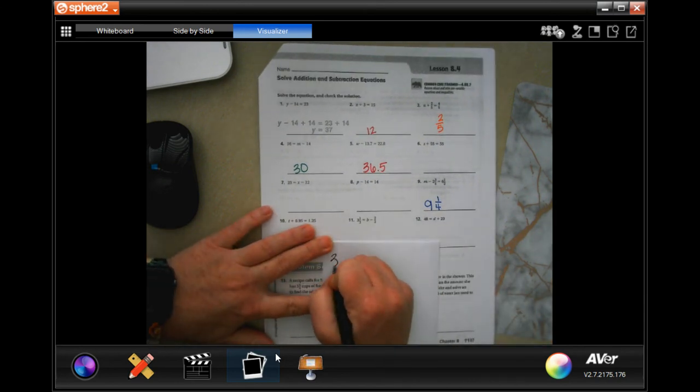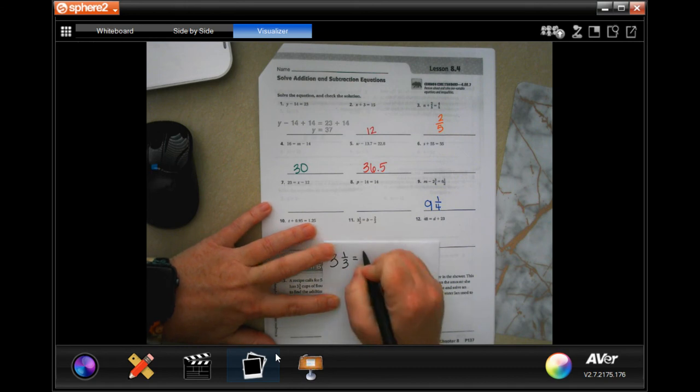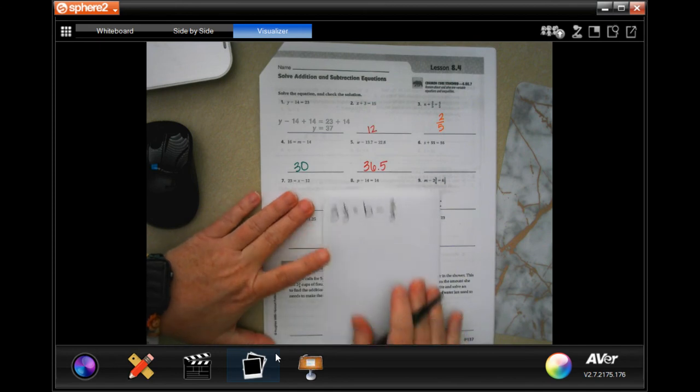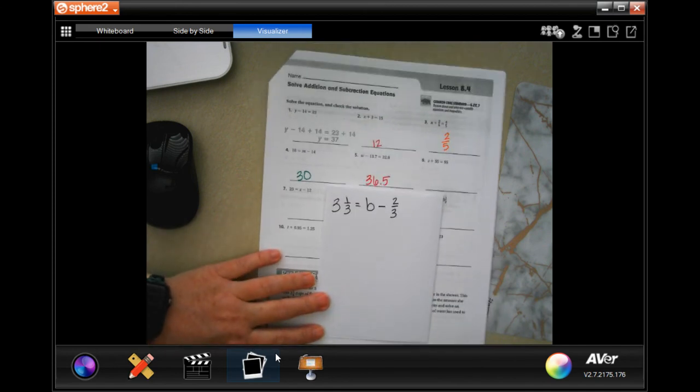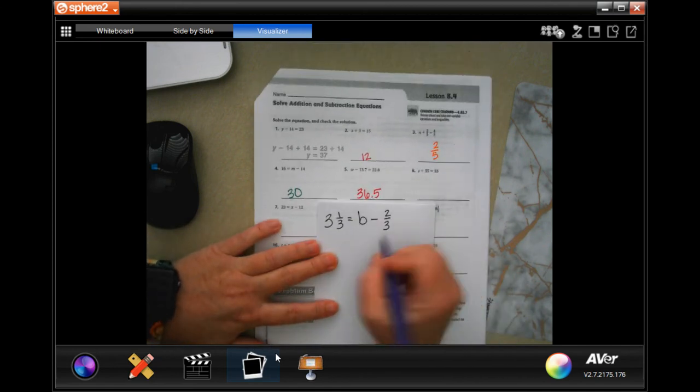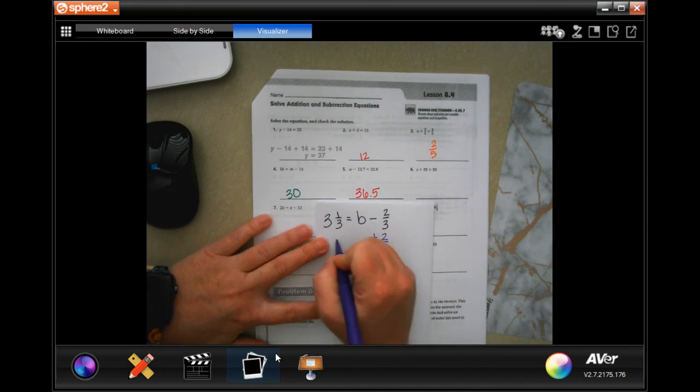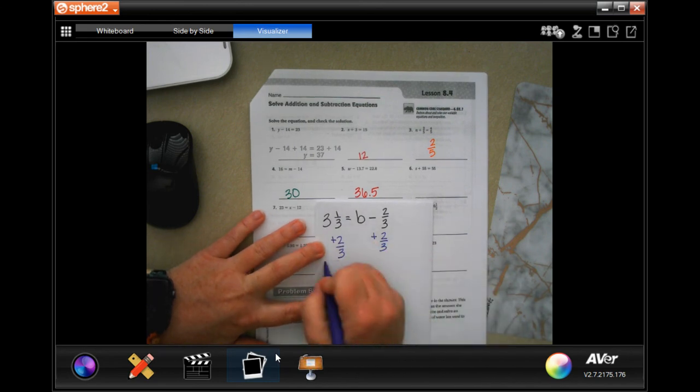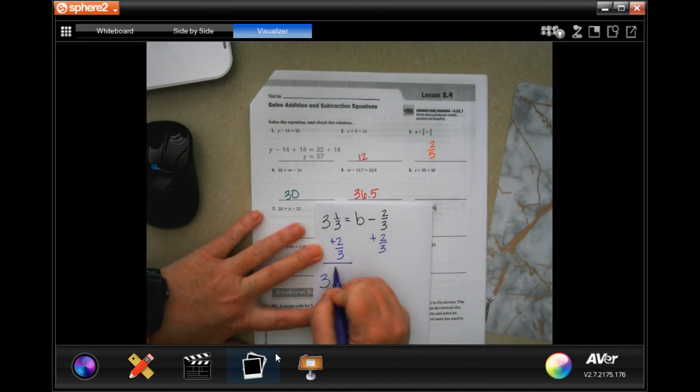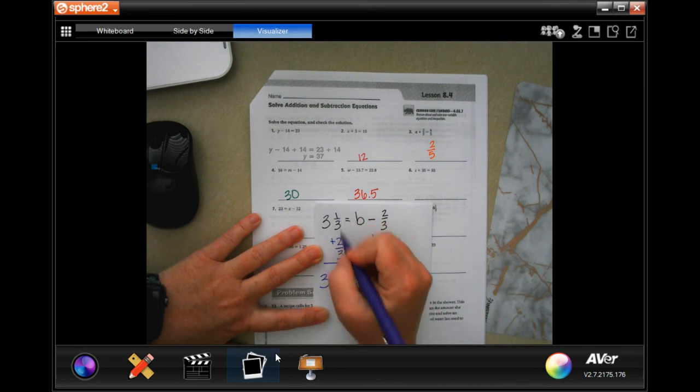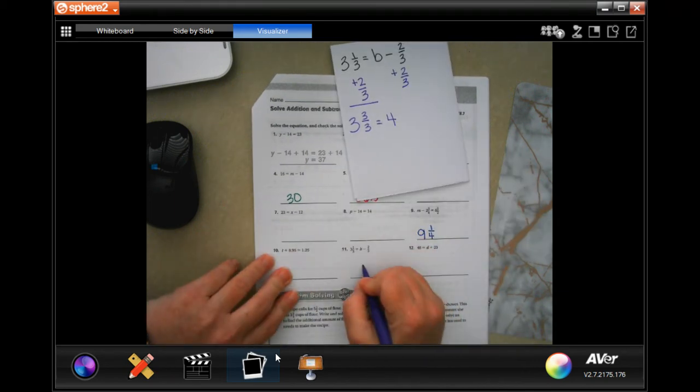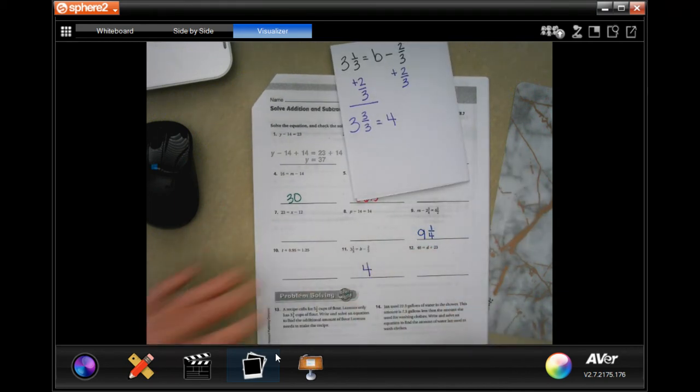We're going to do 3 and 1 third equals B minus 2 thirds. You guys aren't actually going to have to borrow because I have to add it, silly me. Equal sign. Opposite. Plus 2 thirds. Plus 2 thirds. Now I have 3, and my denominator stays the same, and 1 plus 2 is 3. Well, 3 over 3 is equal to 1. So it's equal to 4.